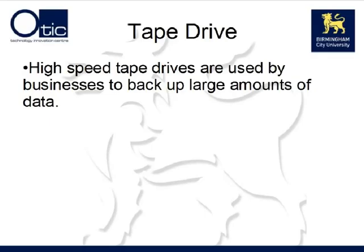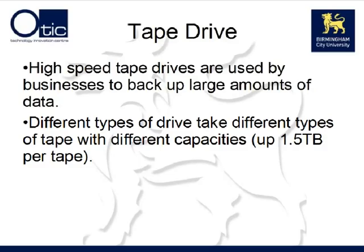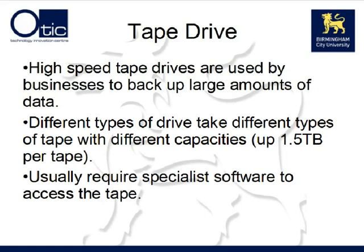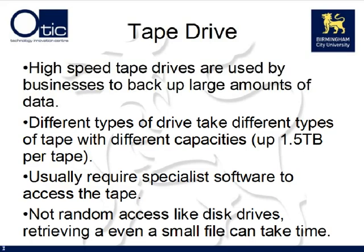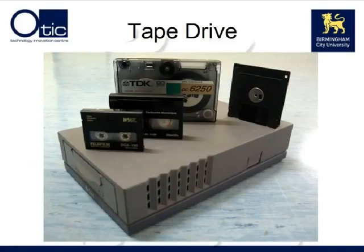The final type of magnetic storage device we'll look at is a tape drive. High-speed tape drives are used by businesses to back up data usually held on servers. The tapes themselves look a little bit like audio tapes or VHS videotapes, though most of them are now digital. They have different storage capacities up to about 1.5 terabytes per tape. Accessing a tape is much more complicated than accessing a disk drive and usually requires specialist software. Tapes are not random access — if you want to find a file at the end of the tape, the computer will have to seek all the way to the end, which can take quite some time. Here we can see a variety of different tapes laid out on top of an external tape drive, with a 3.5-inch floppy disk placed on the right for scale.